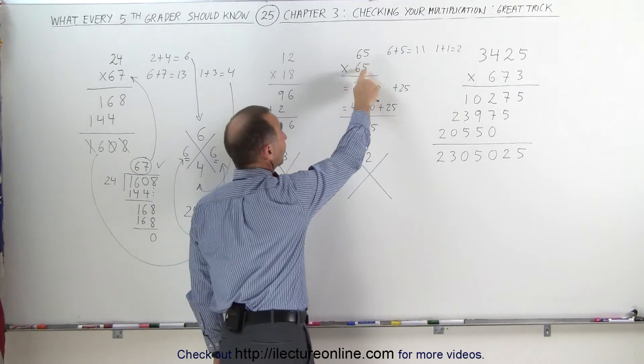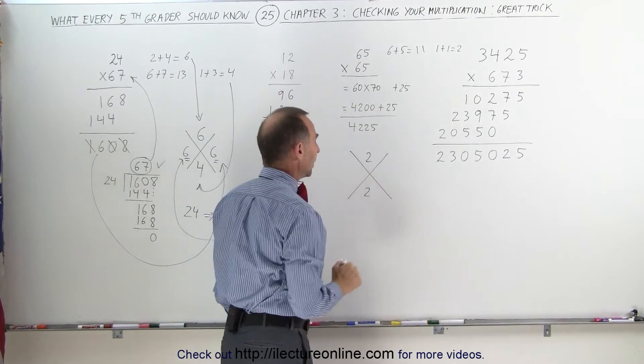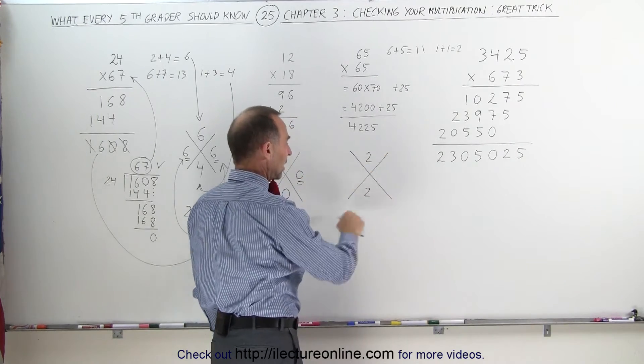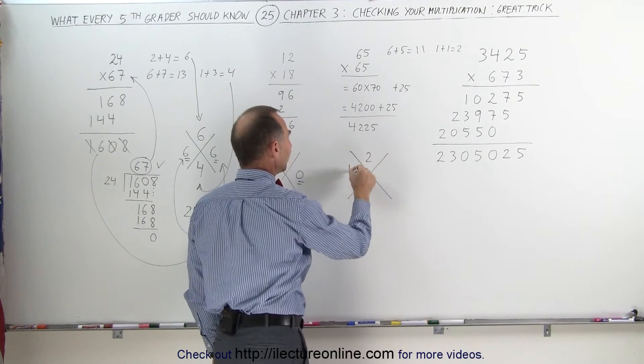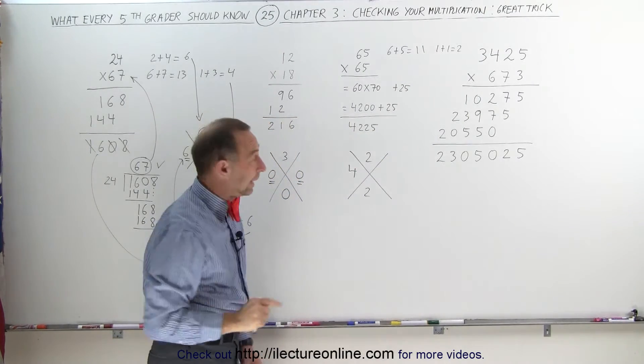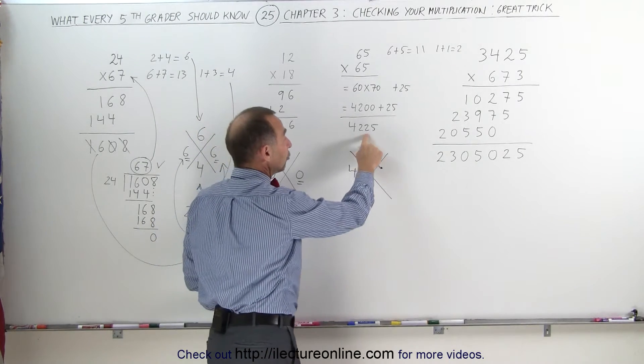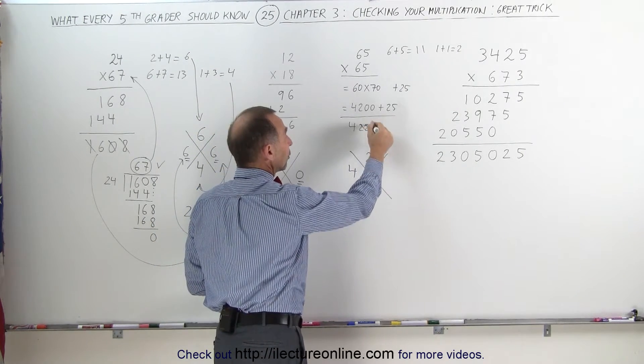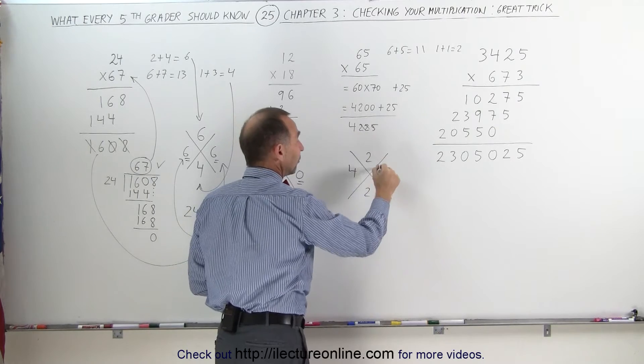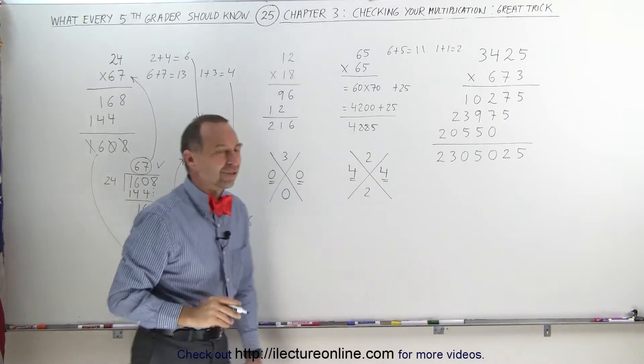Again, for these two numbers, 6 plus 5 is 11. 1 plus 1 is 2. That number goes down here. Now you multiply these two numbers together. 2 times 2 gives me a 4. Now, I add up all these numbers together, and they better add up to a 4. Again, any numbers that add up to 9, we can simply ignore. 2 plus 2 plus 5 is 9, so we can ignore those three numbers. All I have left is a 4, and sure enough, if those two numbers are the same, my multiplication is correct.